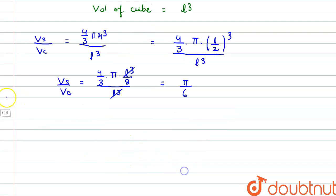So we have Vs by Vc as pi by 6. And if we put the value of pi as 22 by 7, we have 22 by 7 into 6, so the value of Vs by Vc comes to be 11 by 21.